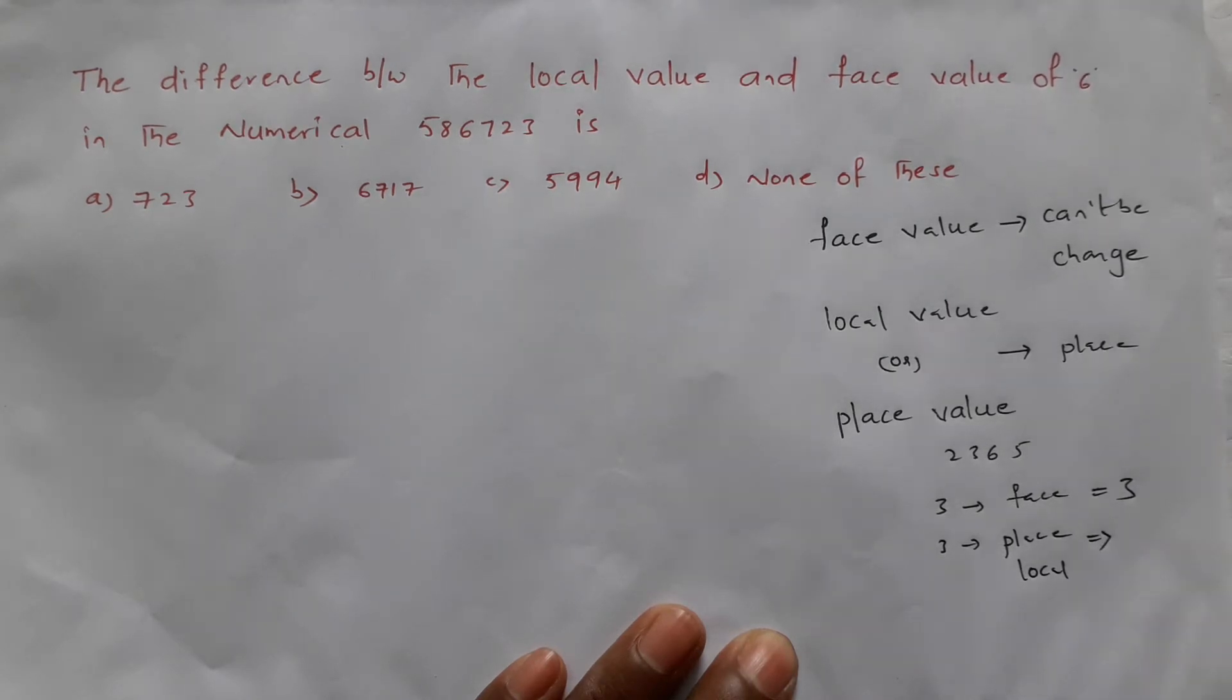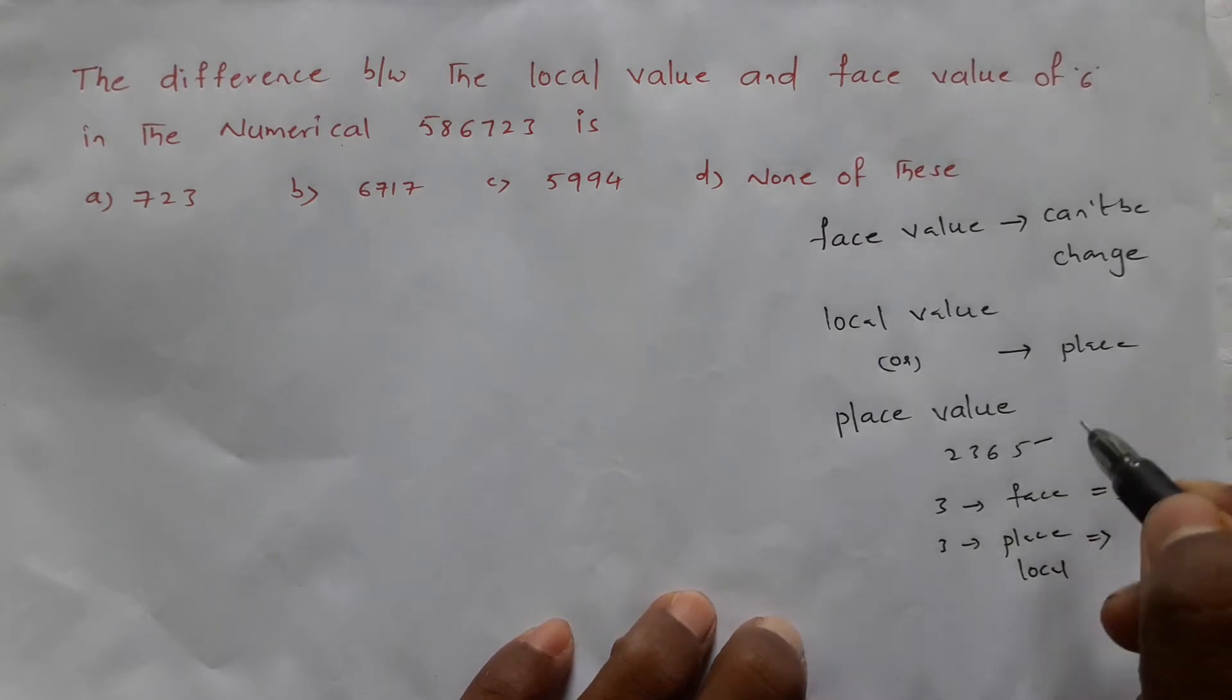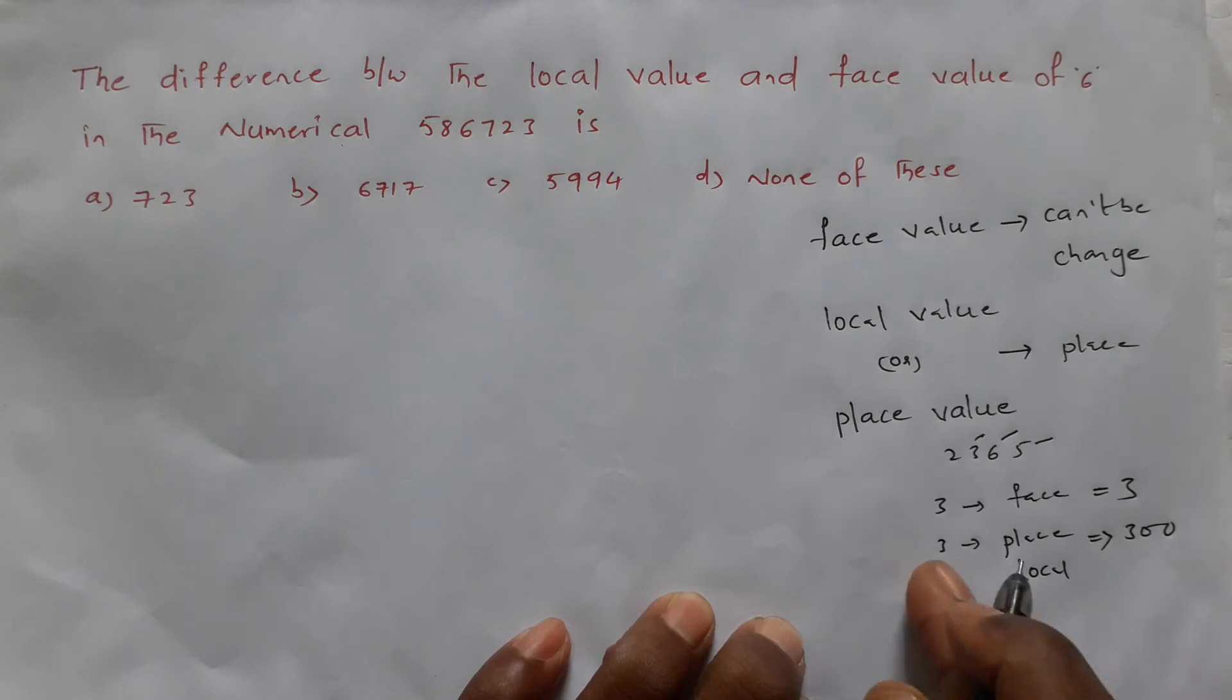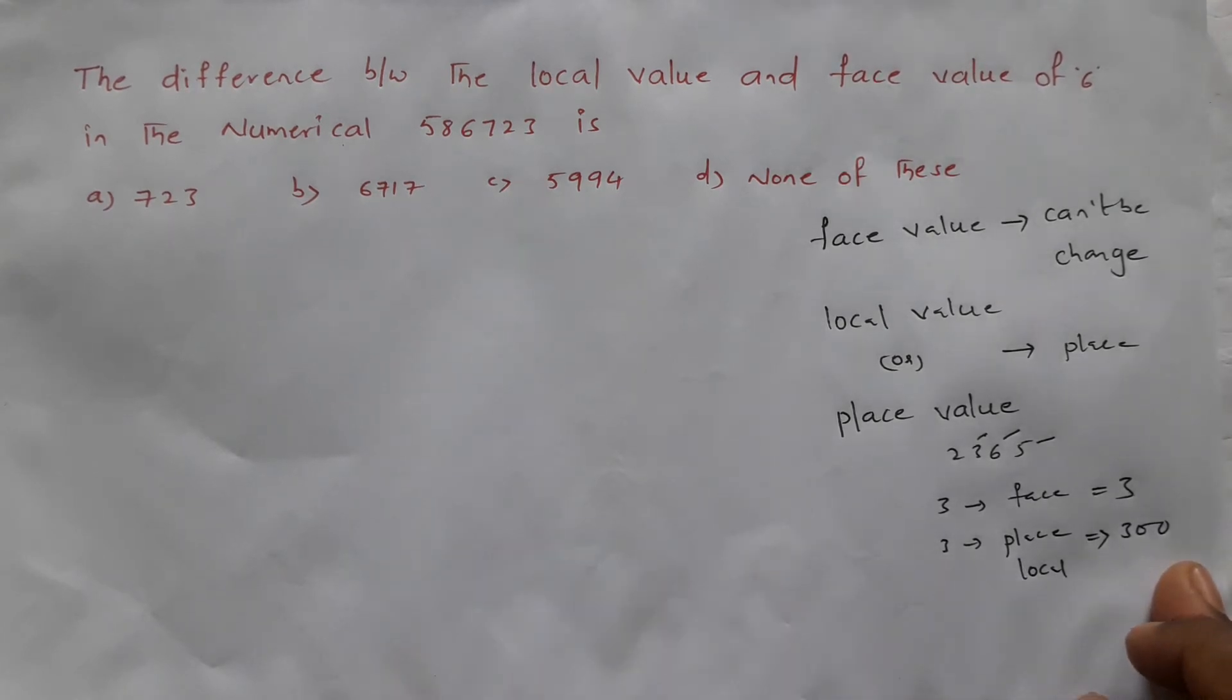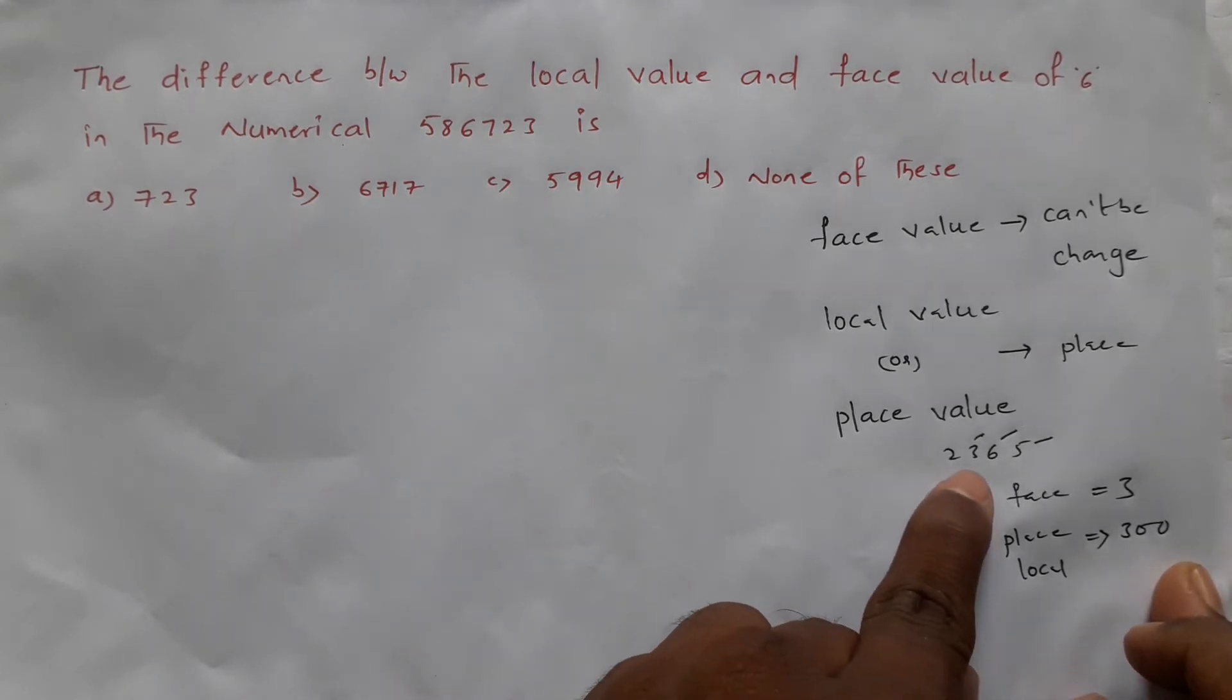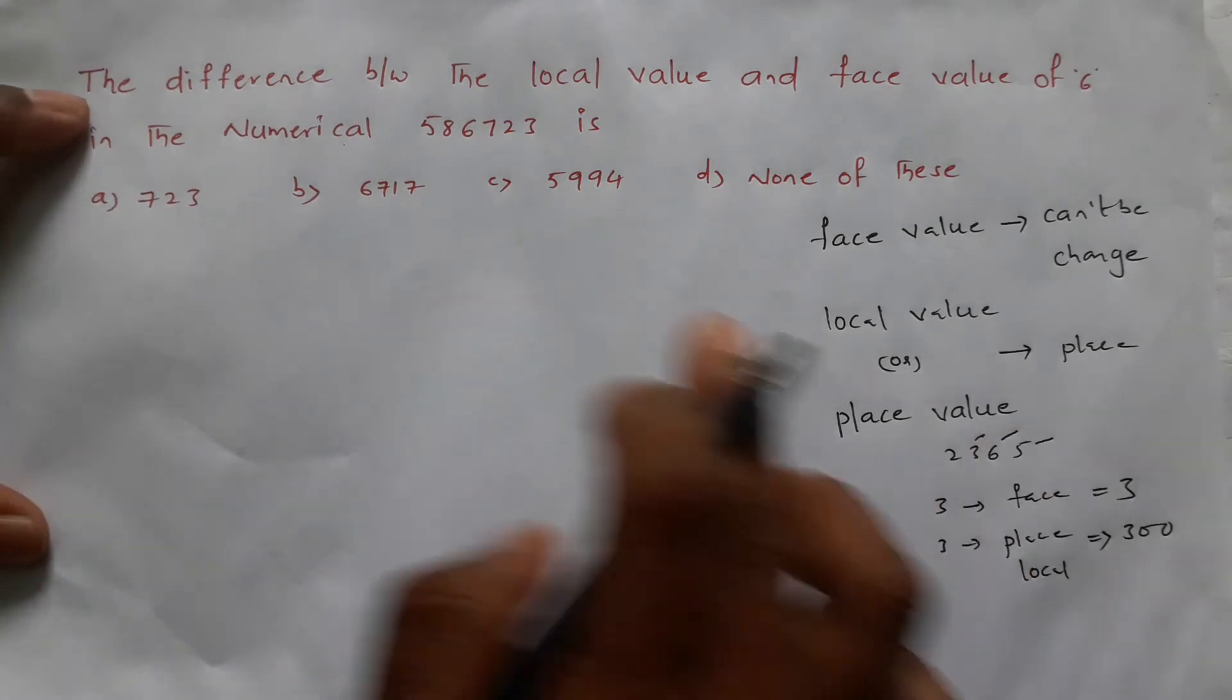Place or local value - units, tens, hundreds. So this 3's place value is 300 because it's in the hundreds place. The place value changes, but face value is always 3.